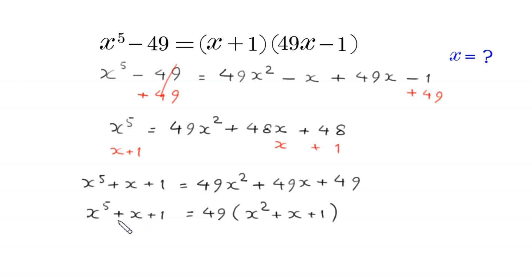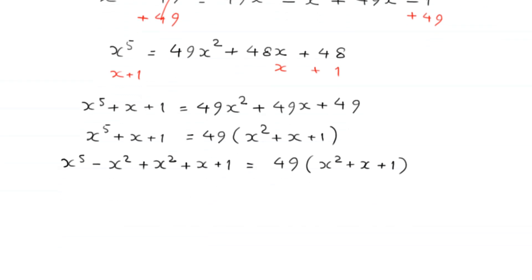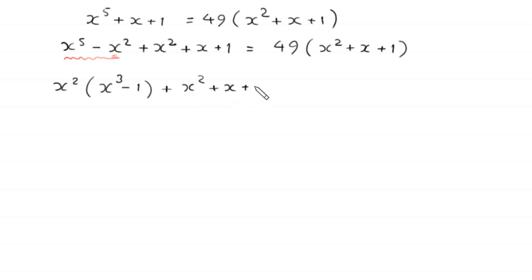From the left hand side, we add and subtract x squared. So x to the power 5 minus x squared, plus x squared plus x plus 1, is equal to 49 times x squared plus x plus 1.